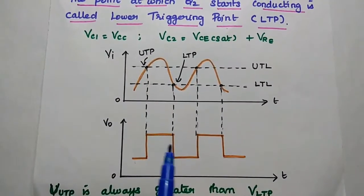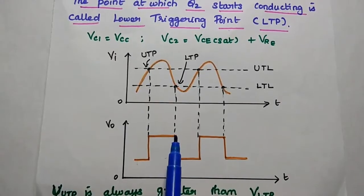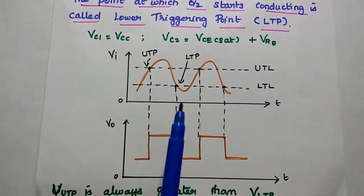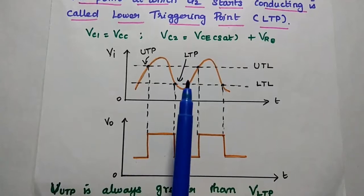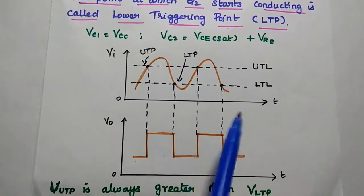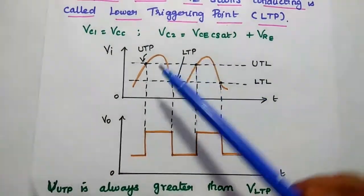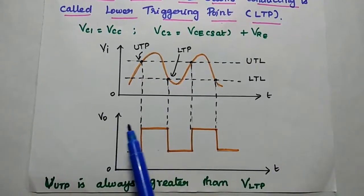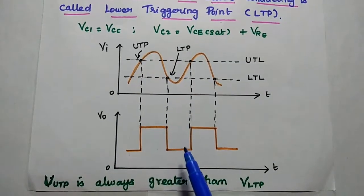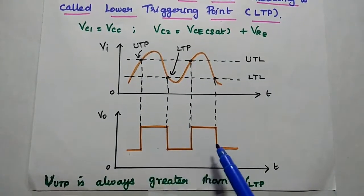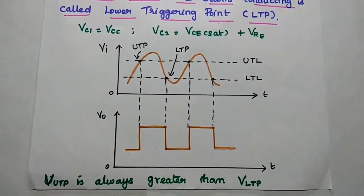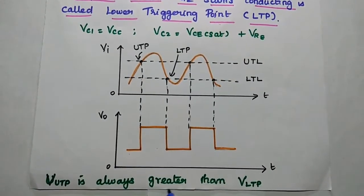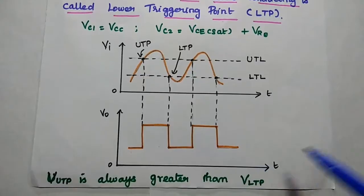In the Schmitt Trigger, the output state remains the same until the input voltage crosses any of the threshold levels. Whenever the input changes from UTP to LTP, there is a change from one stable state to another stable state. The voltage at UTP is always greater than the LTP voltage.